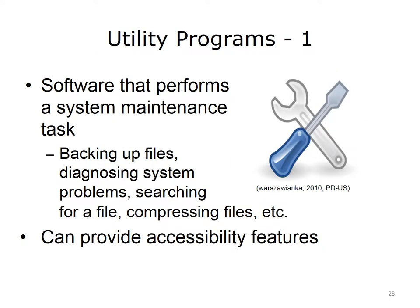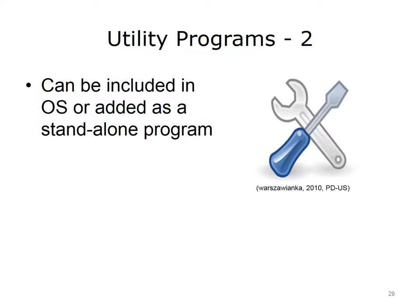So far we've been talking about only one kind of system software: operating system software. If you remember from earlier in the lecture, there is a second kind of system software called utility programs. These programs perform system tasks like backing up files, diagnosing system problems, searching for a file, and compressing files. Also, these utilities can enable the use of computers by those having a disability or impairment — for example, increasing all font sizes for easier reading. These utility programs may come with the installation of the OS or may need to be installed later. Some experts consider utility programs to be part of the OS, while others do not. In any case, the OS and the utility programs work together to make computers usable.